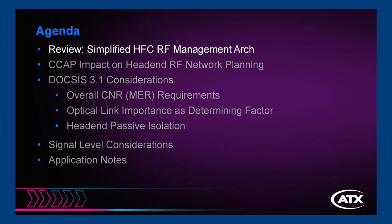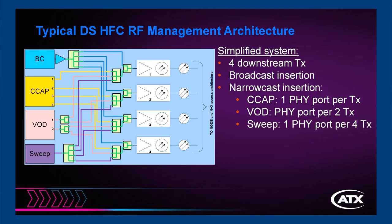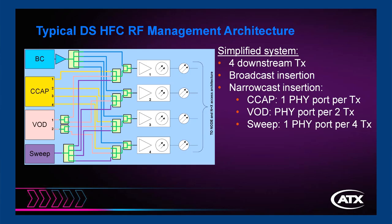From there we'll go to some signal-level considerations and general application notes from DOCSIS 3.1 implementations and trials in Europe and other projects around the world. ATX Networks is focused particularly on head-end RF management — it's our core business. This simplified drawing shows four downstream transmitters with narrowcast devices combined with the broadcast feed. In the CCAP case, we've gone with a one-to-one port ratio to the RF combiner before the transmitter. It could be VOD, a legacy CMTS, or whatever narrowcast devices you're inserting — it will be different depending on the operator.